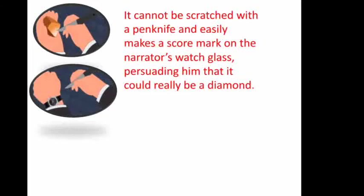The man handed over the brown pebble, which he called a diamond, to the narrator. The narrator scratched it with a penknife to examine whether it was truly a diamond. The knife easily made a score mark on the narrator's watch glass, but was not able to make a mark on the pebble, leading him to conclude that it could really be a diamond.